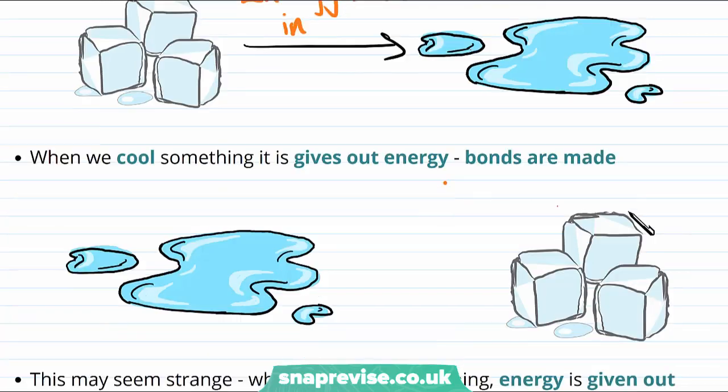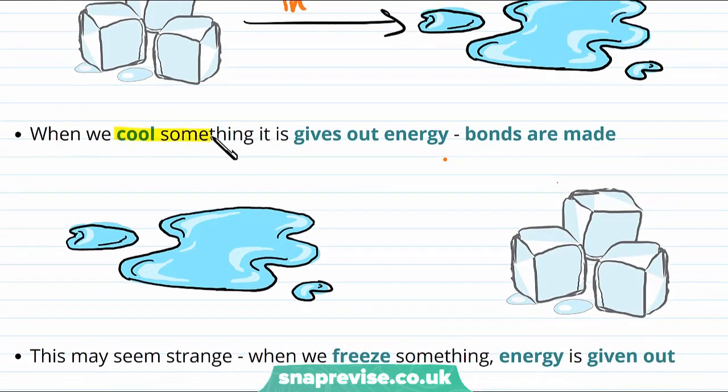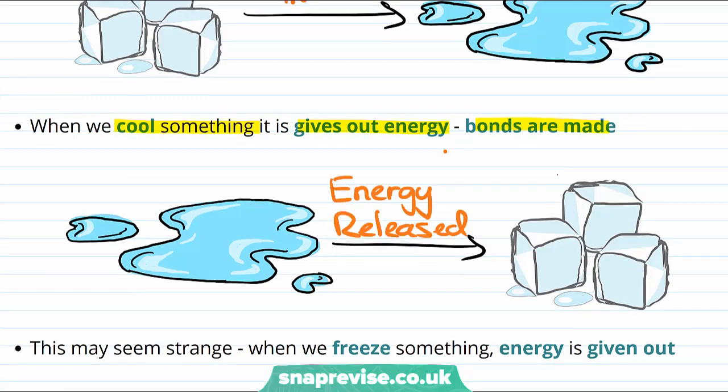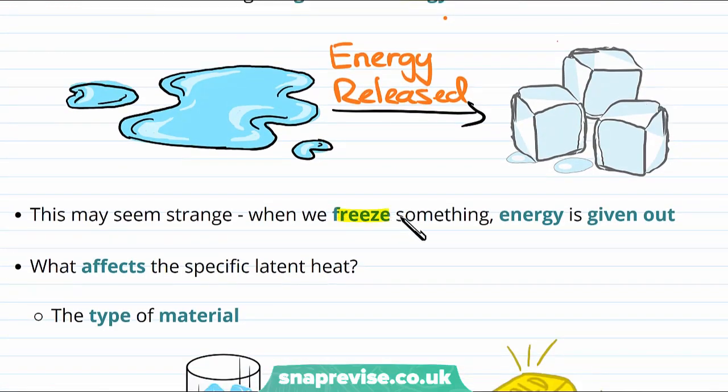What happens if we look at the other way round? When we cool something, it gives out energy and bonds are made. This is the slightly more surprising case. When liquid water freezes to become ice and the intermolecular bonds form, this actually releases energy. So this is quite a strange and surprising concept. When we freeze something, energy is given out.